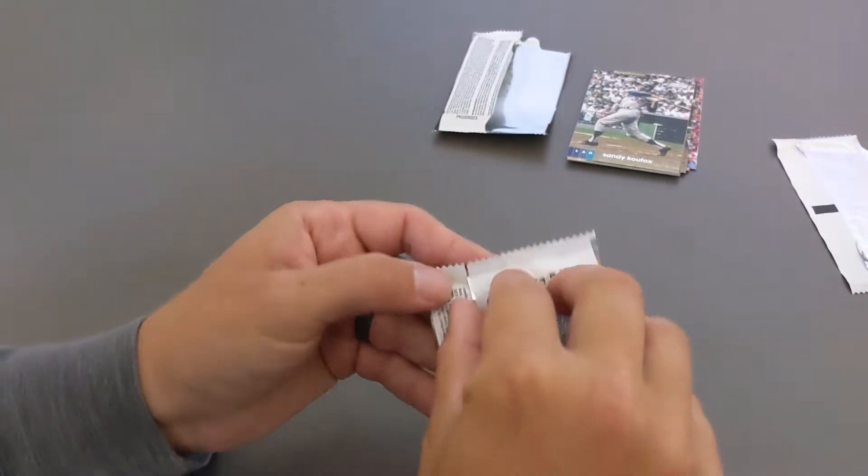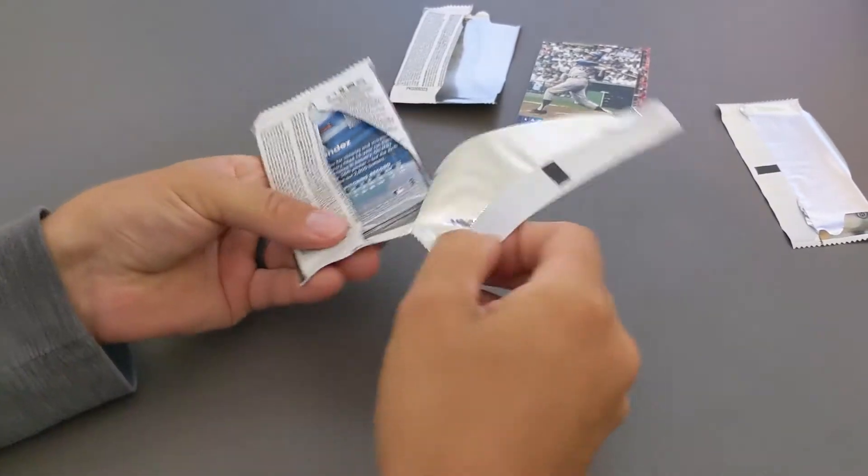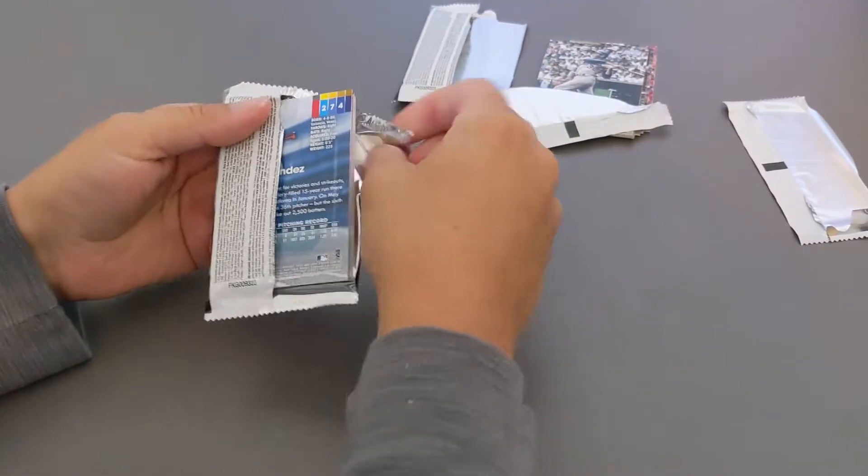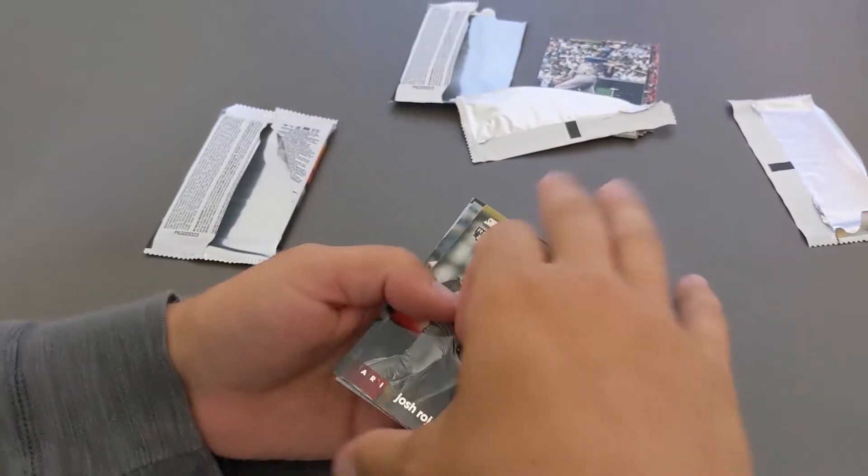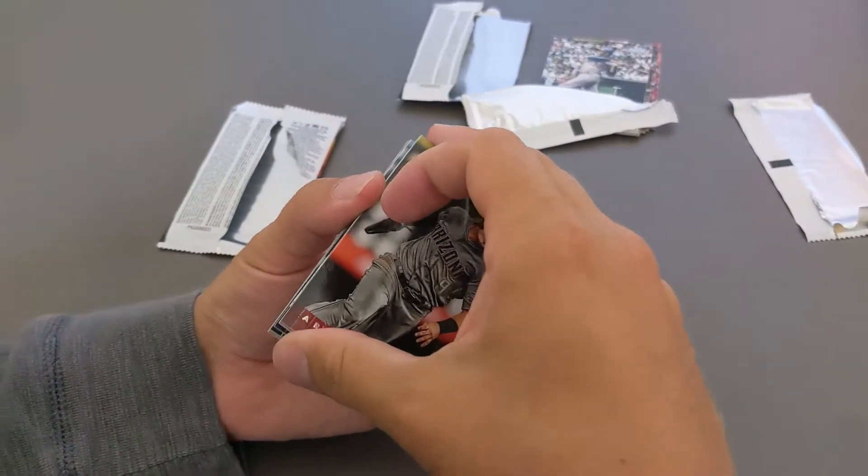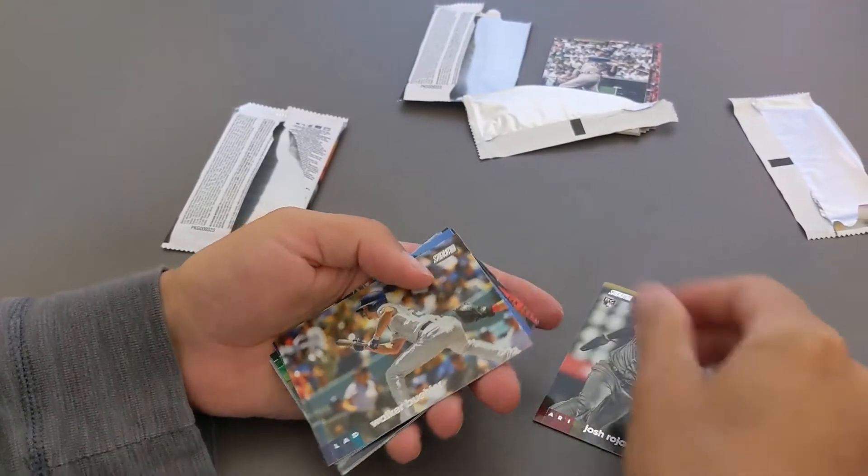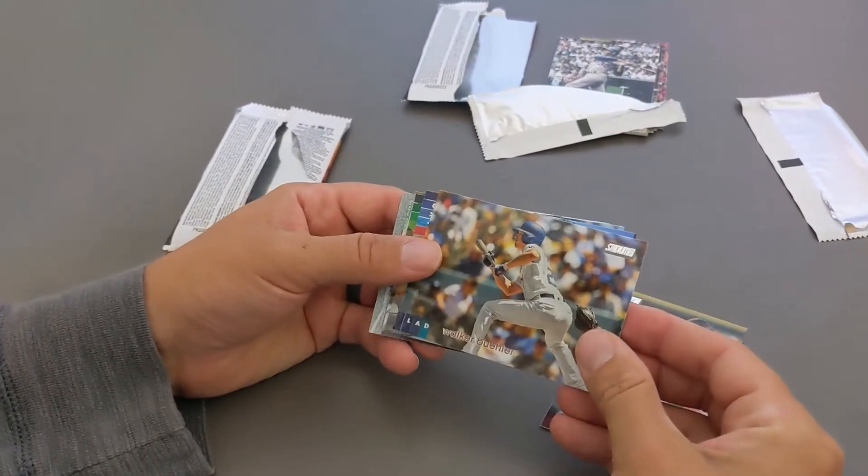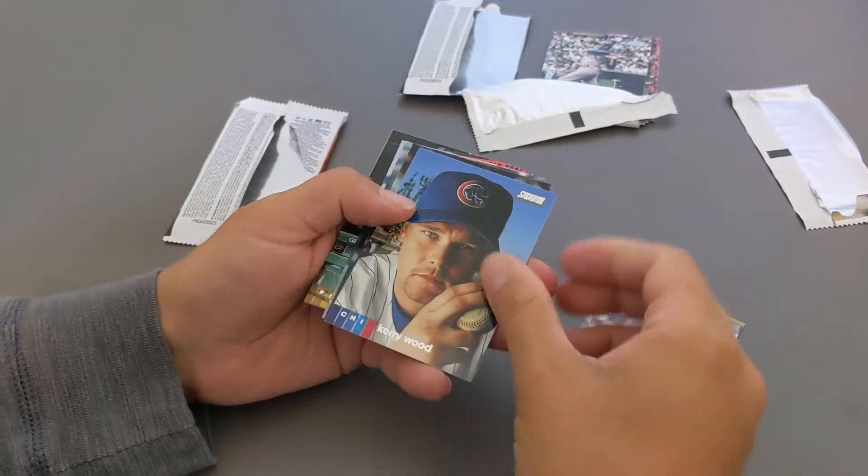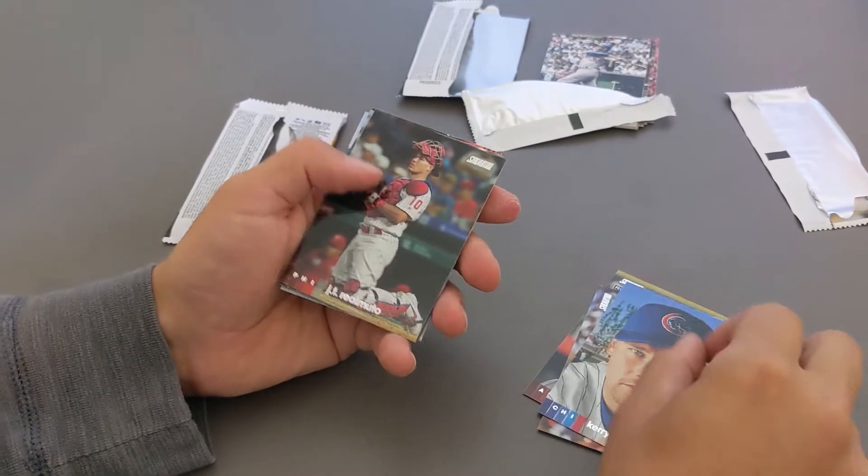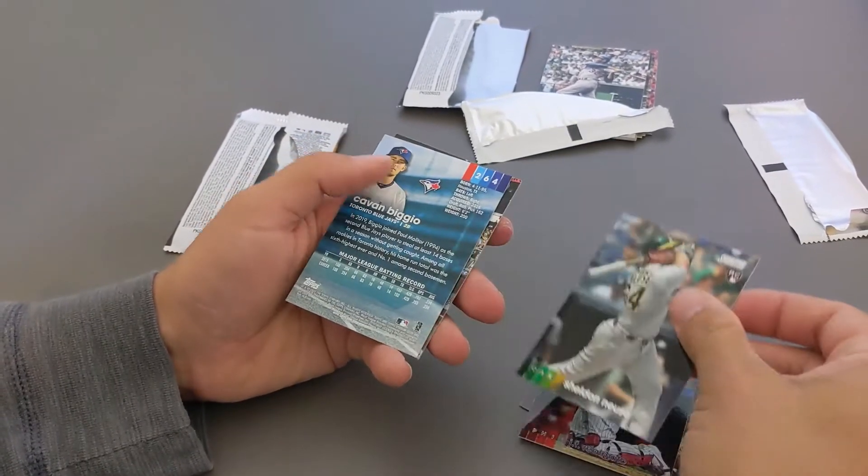And open pack number two. And then Otto will open his cards. Josh. These ones are stuck too. Josh Rojas rookie card. We have Walker Buehler. We have Kerry Wood. JT Realmuto. Sheldon Neuse rookie card.